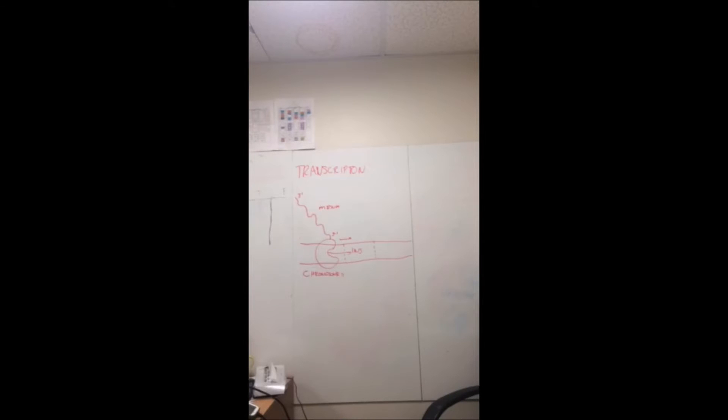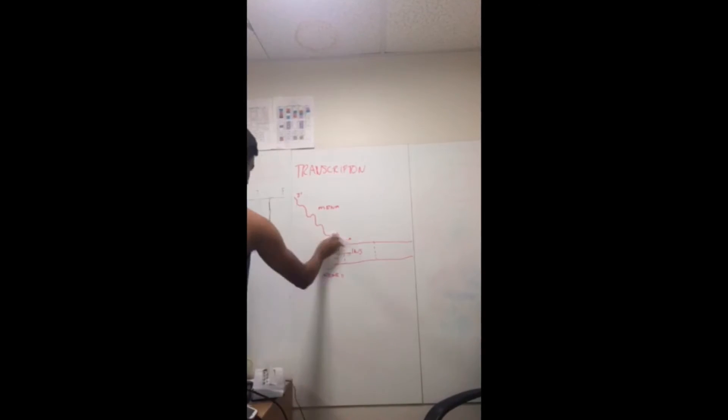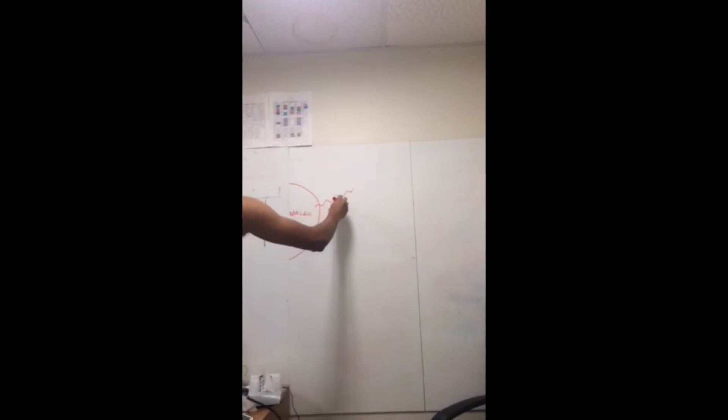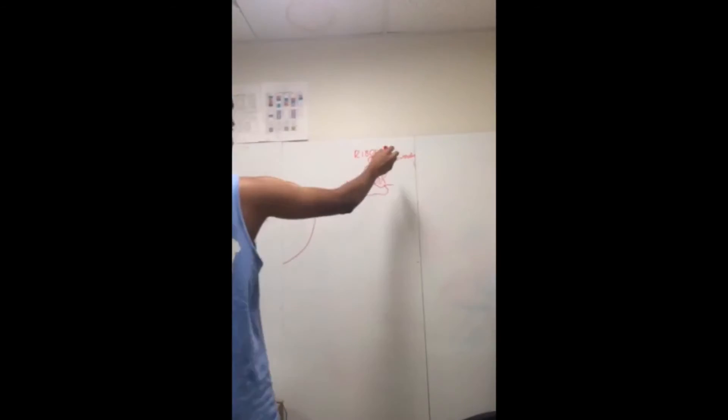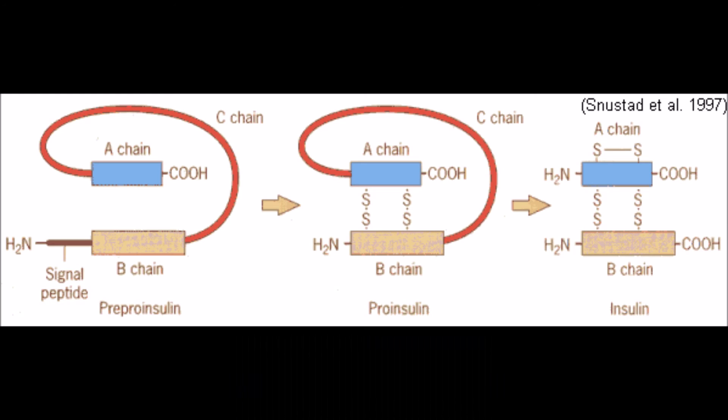The mRNA leaves the nucleus and attaches to a ribosome. The ribosome translates the mRNA into a protein 110 amino acids in length. This protein is called pre-proinsulin. It contains a signal peptide 24 amino acids in length, which is required for the protein to cross the cell membrane.